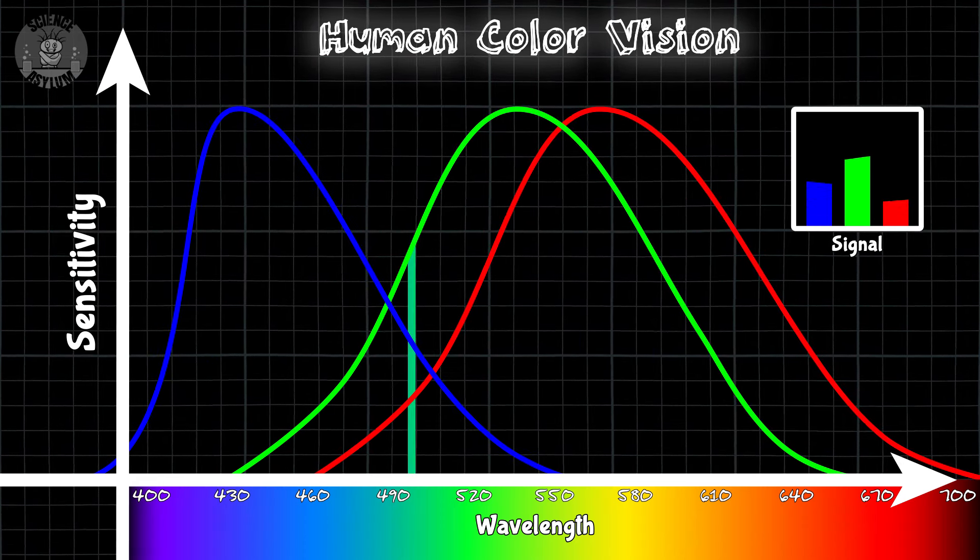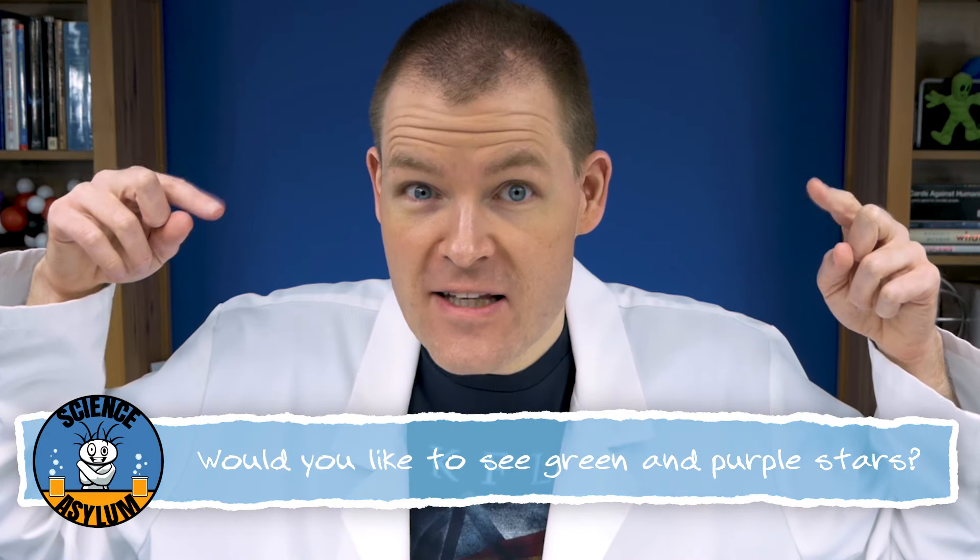So, why aren't there green or purple stars? Because color is more complicated than the visible spectrum. Stars emit multiple wavelengths of light at the same time. When colors mix, we have to consider how all those signals are going to be interpreted by the human brain. Stars emit light based on their surface temperature, which only generates colors along this curve. Green and purple aren't on that curve. So, how cool would it be to see green and purple stars anyway? Let us know in the comments.